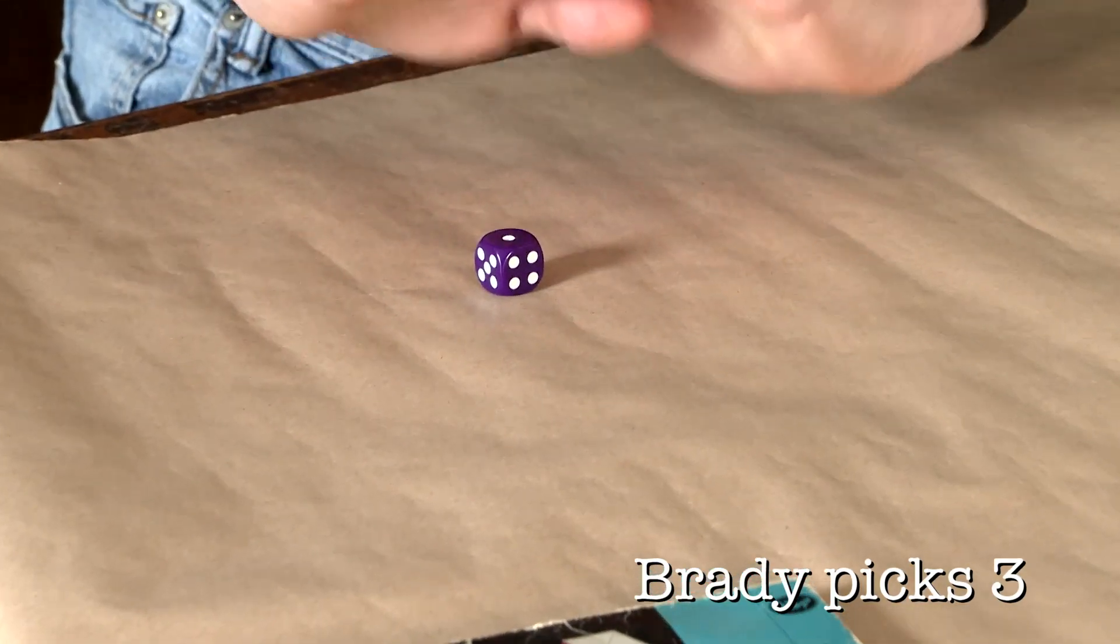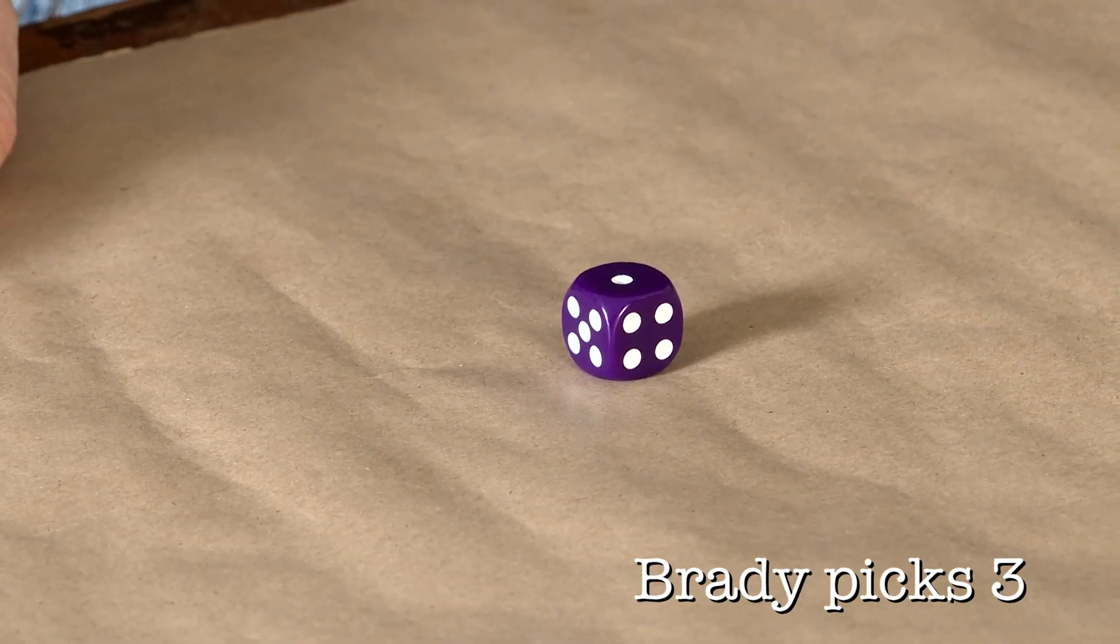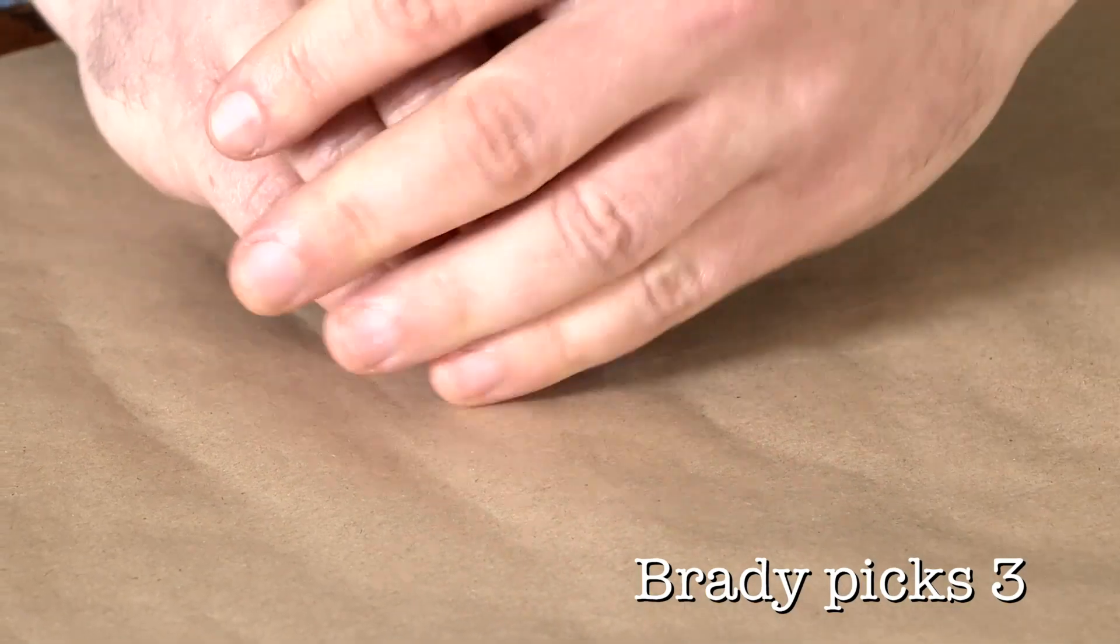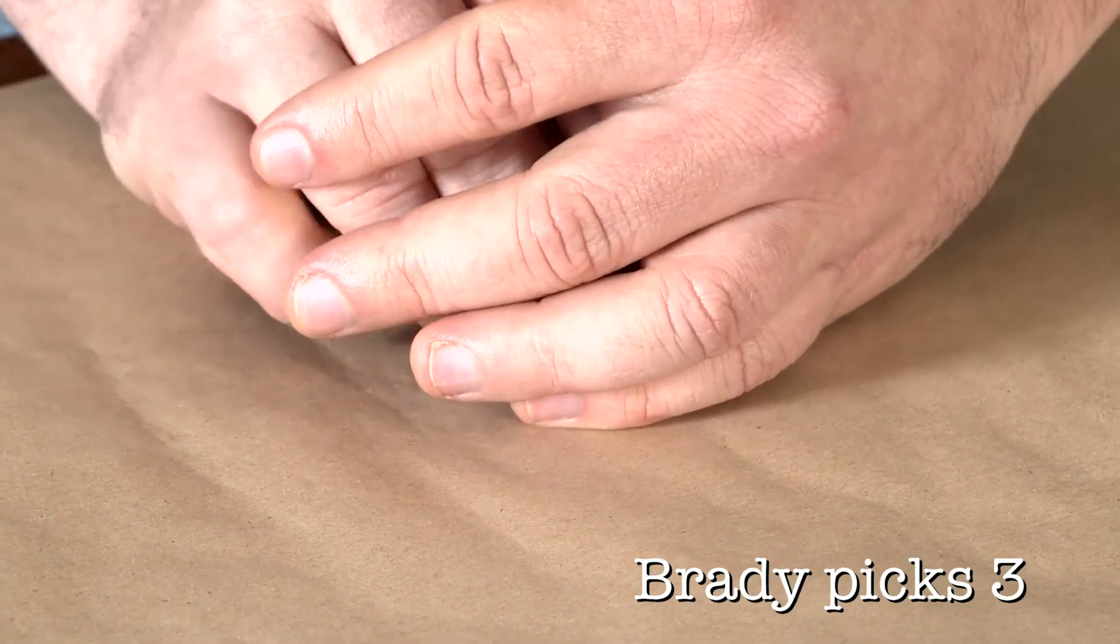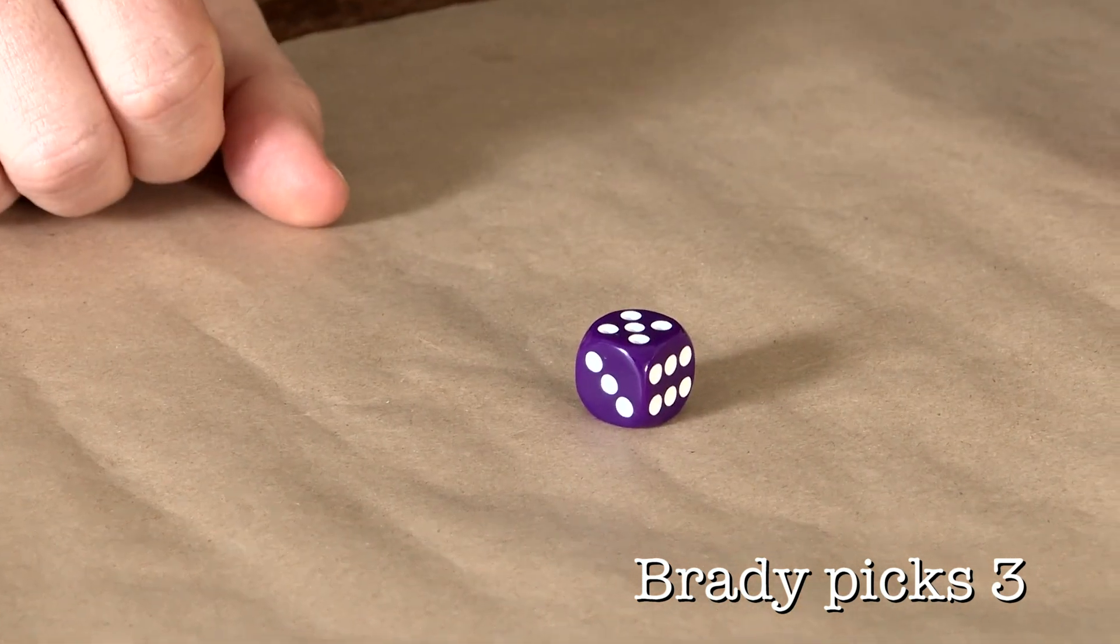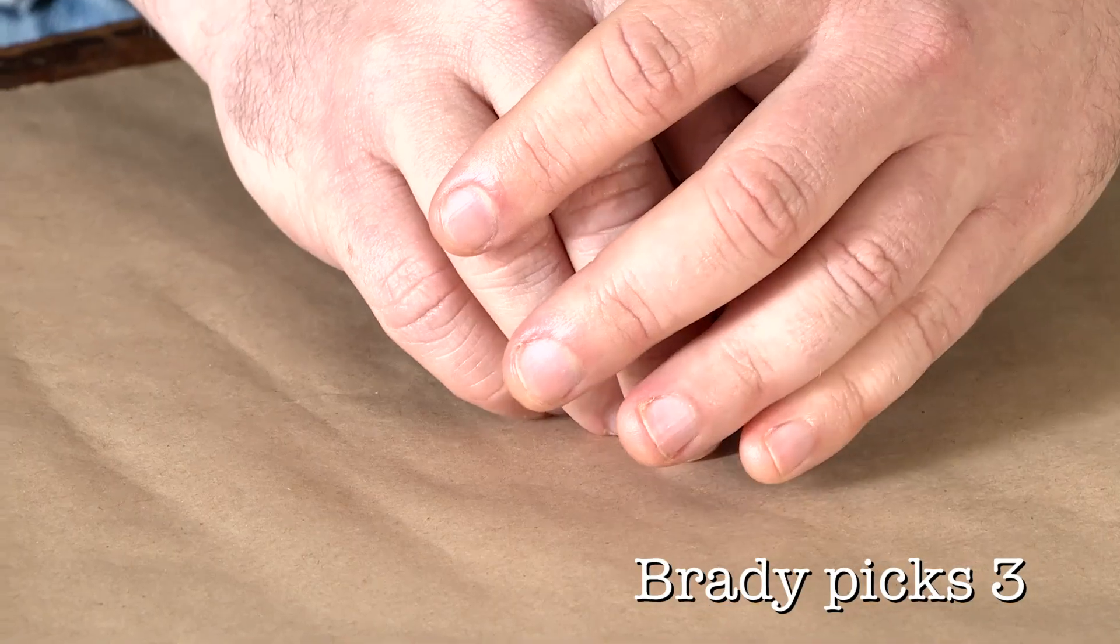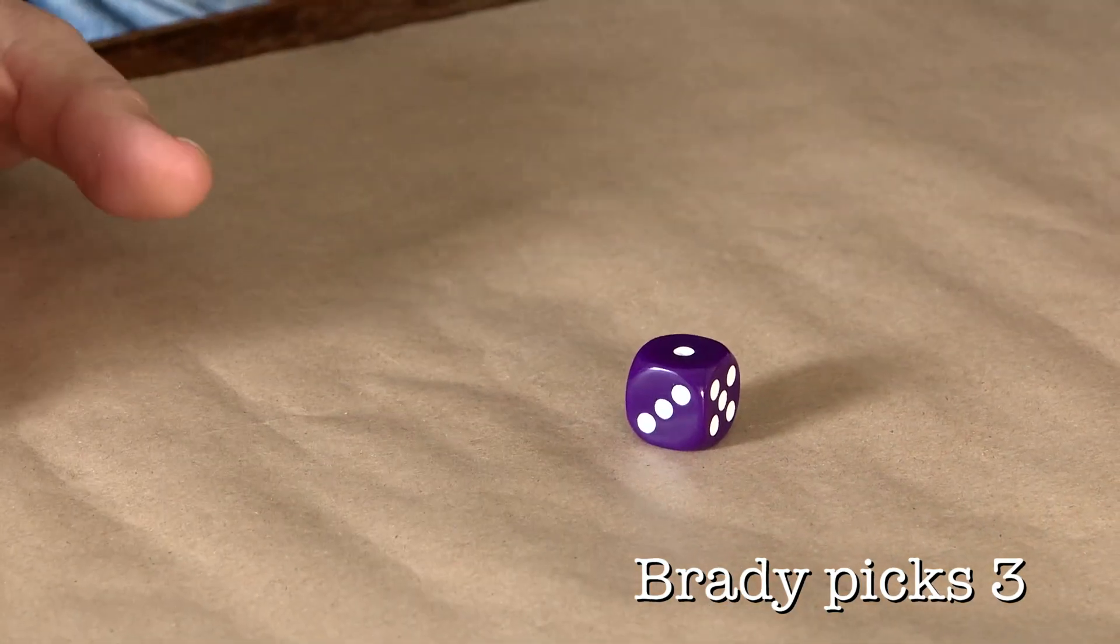You should be able to see three numbers on the die. Yes, I can. Can you see your number? No. Interesting. Can you see your number now? Yes. That's interesting. Can you see your number now? Yes.